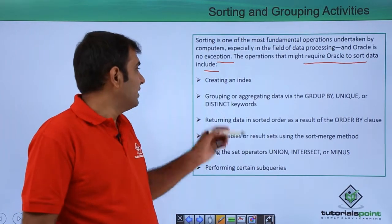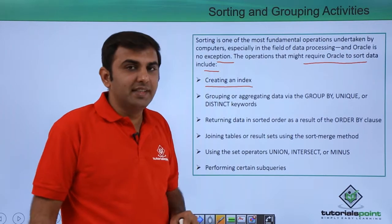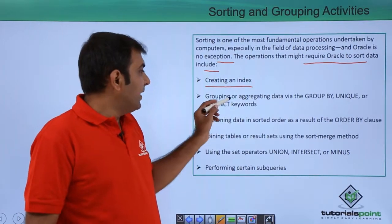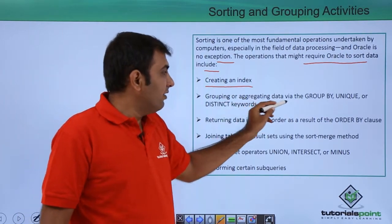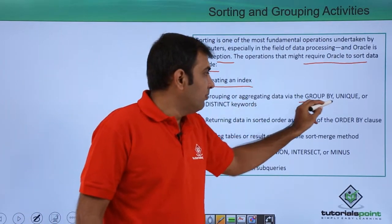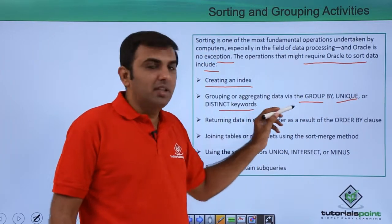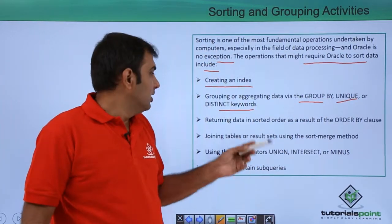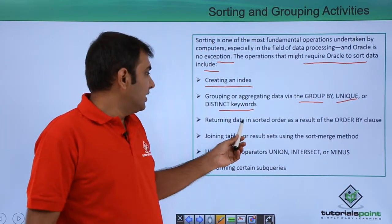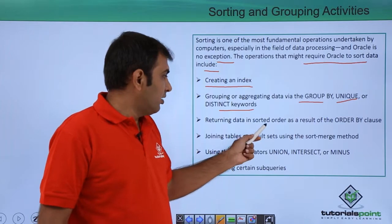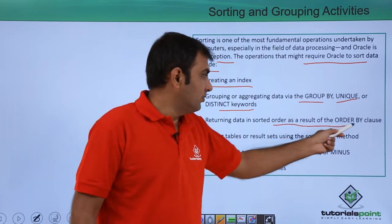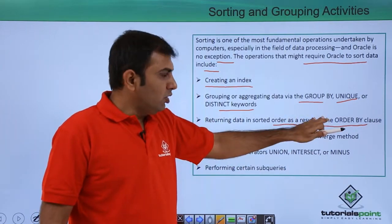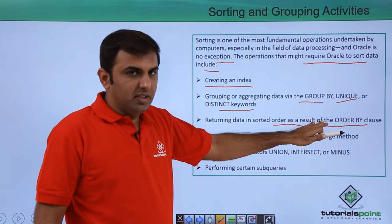These are the activities: creating indexing — whenever you are creating an index, sorting is done. Grouping and aggregating the data via GROUP BY, UNIQUE, or the DISTINCT keyword — at that time also sorting is done. Returning the data in sorted order as a result of the ORDER BY clause — in this also sorting is done.